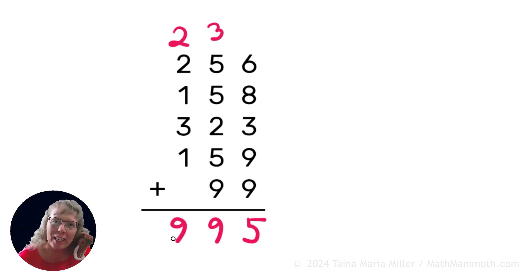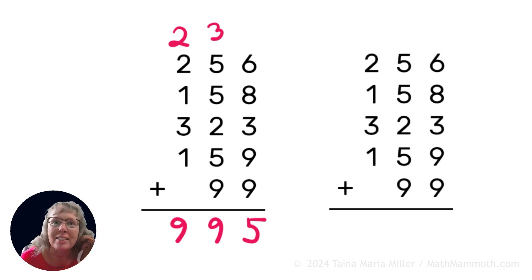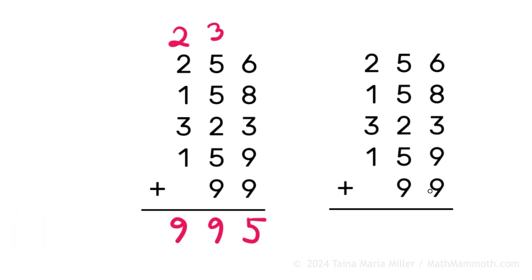Okay, and now it's time to check it, and the way we check it is, I will add those numbers in a different order. Okay, so let's do the same problem again. And this time I will start from the bottom up. So I will go, 9 plus 9 is 18, plus 3 is 21, plus 8 is 29, plus 6 is 35. So far it's the same.